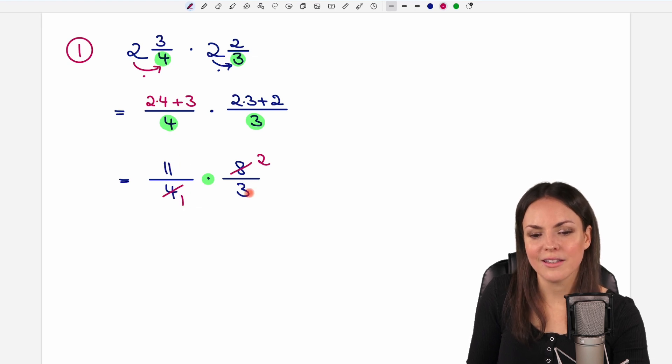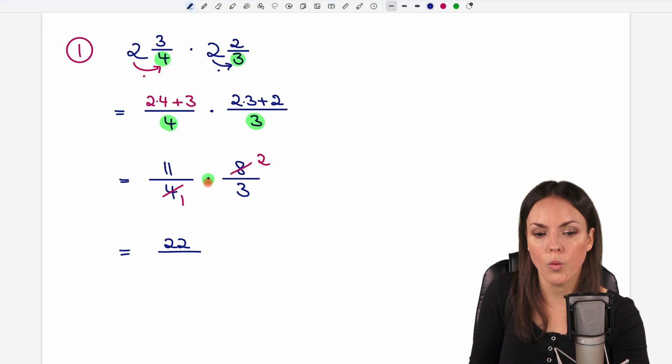The 11 and the 3 don't have common factors, so we can't do anything else, but it's not a problem. We just multiply now. So, here this number on the top with this number on the top, 11 times 2 equals 22, and on the bottom the same, 1 times 3, we have 3.